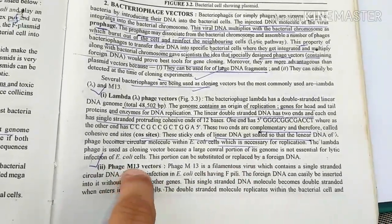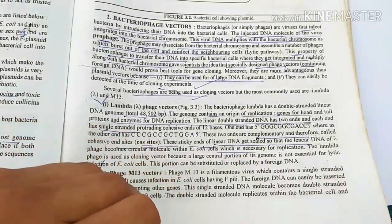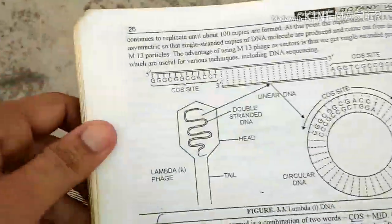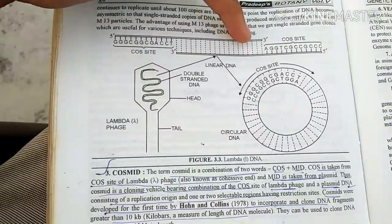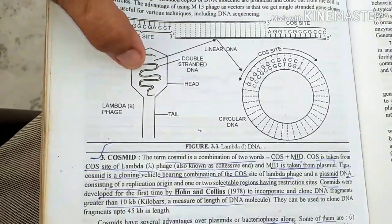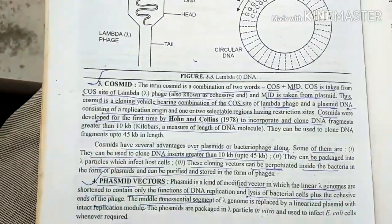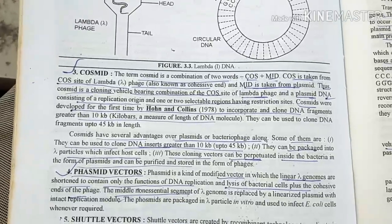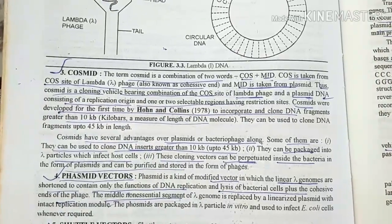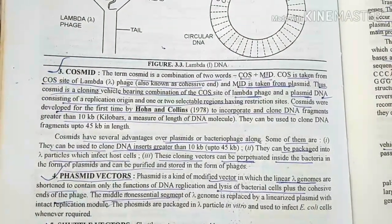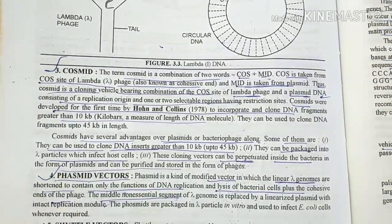Another vector is the M13 phage. Looking at the lambda phage, you can see the cos sites. The cos sites allow the lambda phage to circularize into circular DNA. From this, a cosmid is formed. The cosmid is the cos site of lambda phage combined with a plasmid — cos plus mid equals cosmid. The cosmid is a cloning vector containing recombinant DNA.